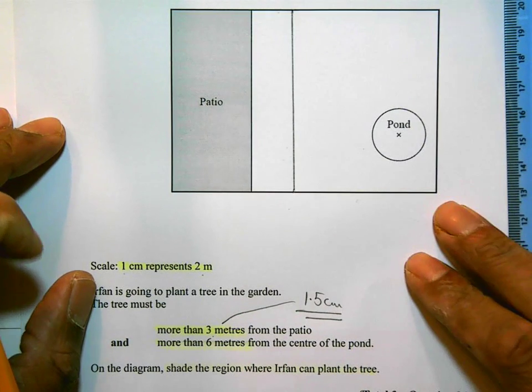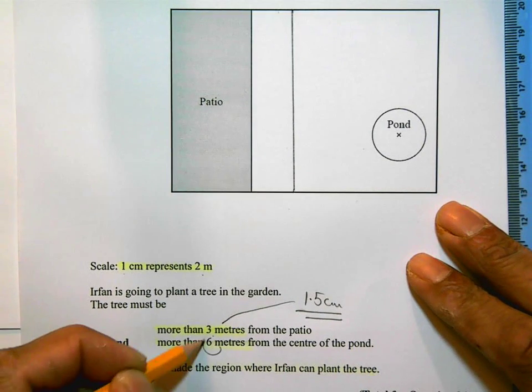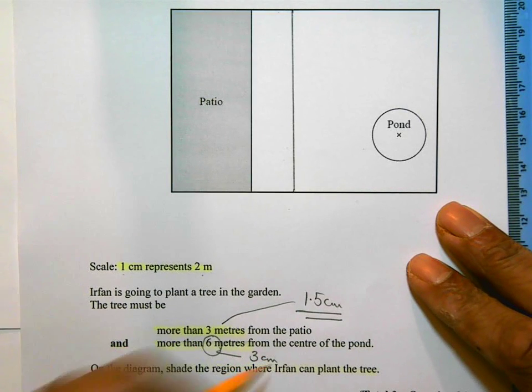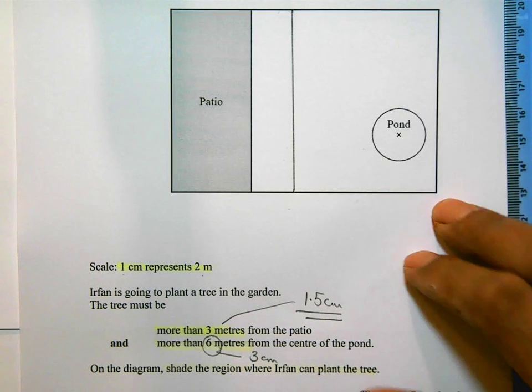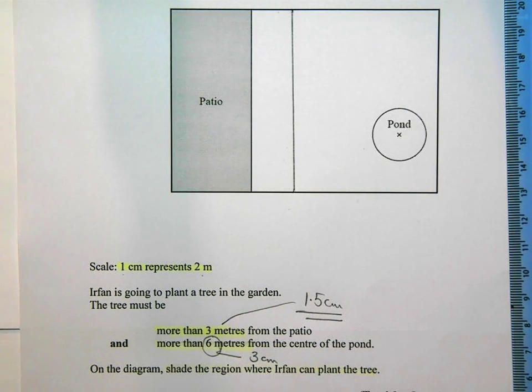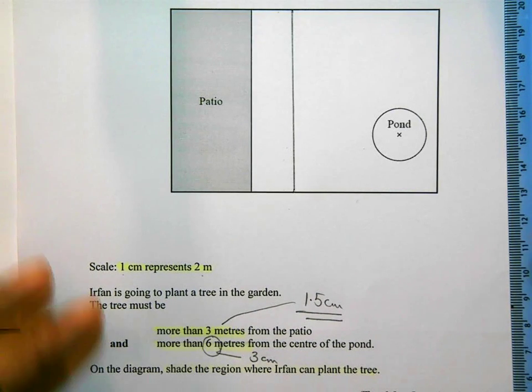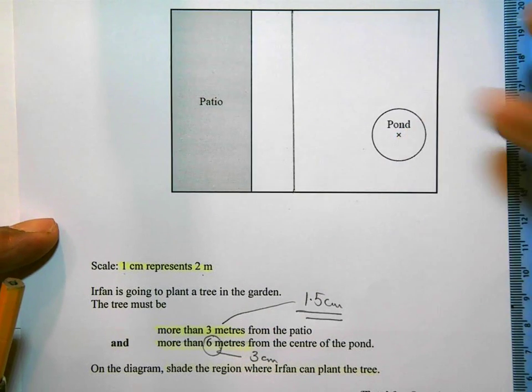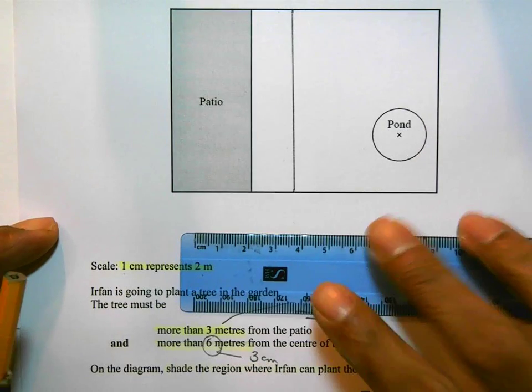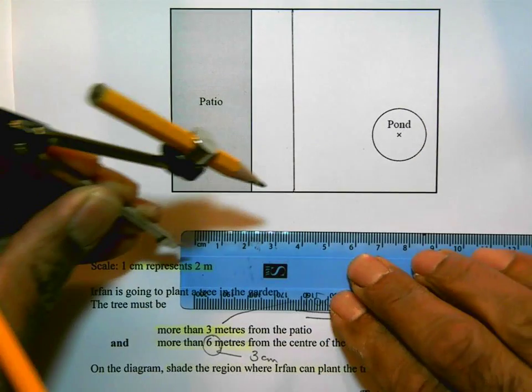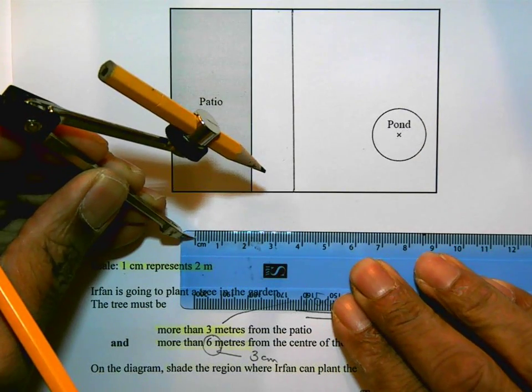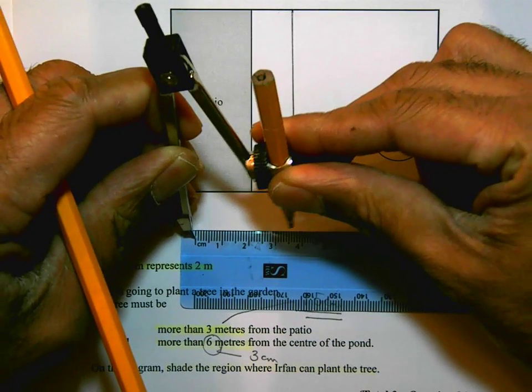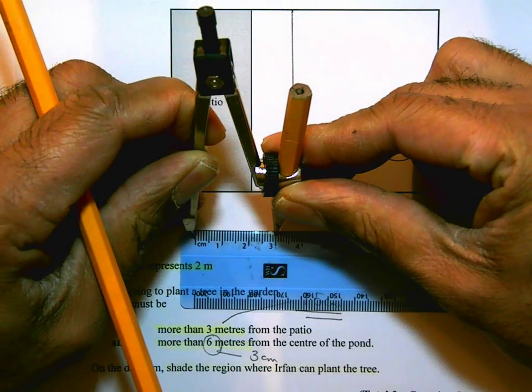Now six meters, on the diagram, that's going to mean three centimeters. So half of that. So I need to use a compass for that because they're talking about three centimeters from the center of the pond there. I'm going to use my ruler, my compass, and I may have shown you this before, but I'm going to put my compass point in there, sort of stab it in at zero, and then make sure my pencil is on three.